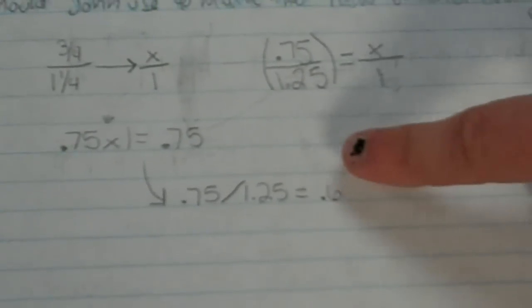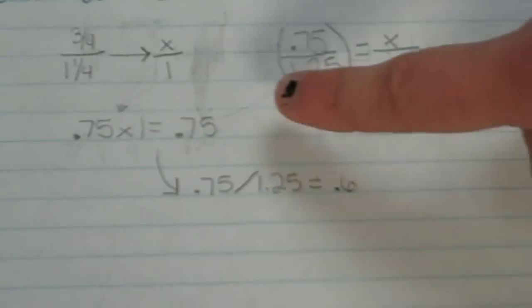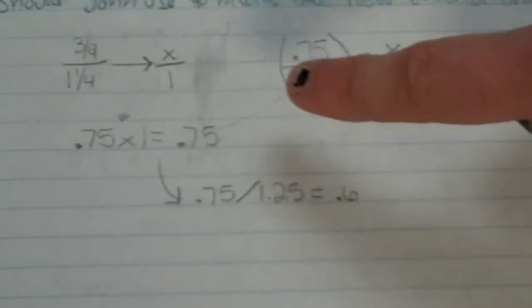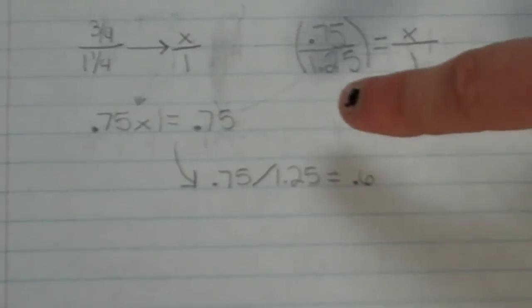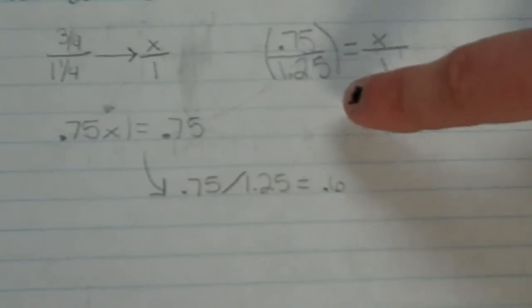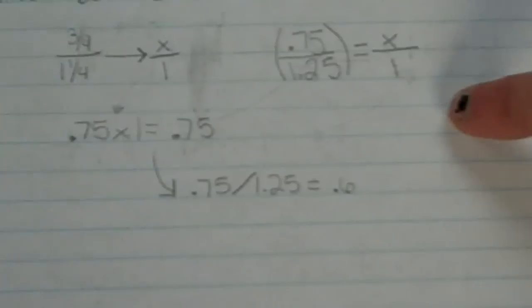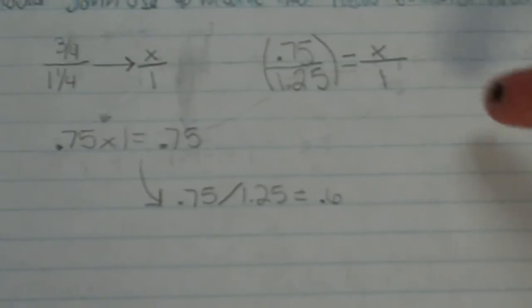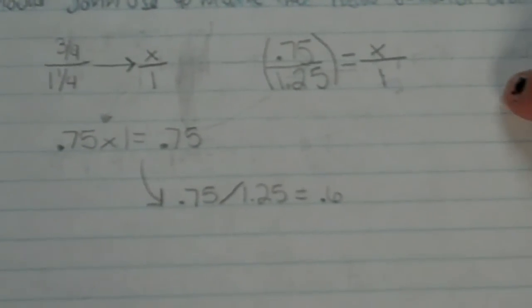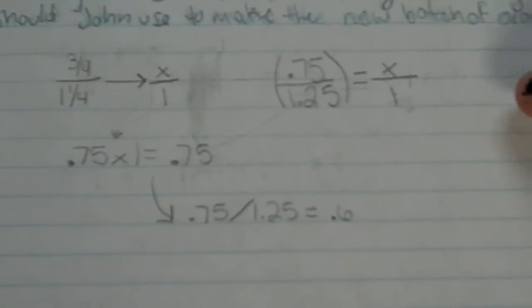And then, so 0.75 times 1 equals 0.75. And then, so it's 1.75 divided by 1.25 equals 0.6. So he used 0.6 liters of yellow paint to make the new 2 liters of orange paint.